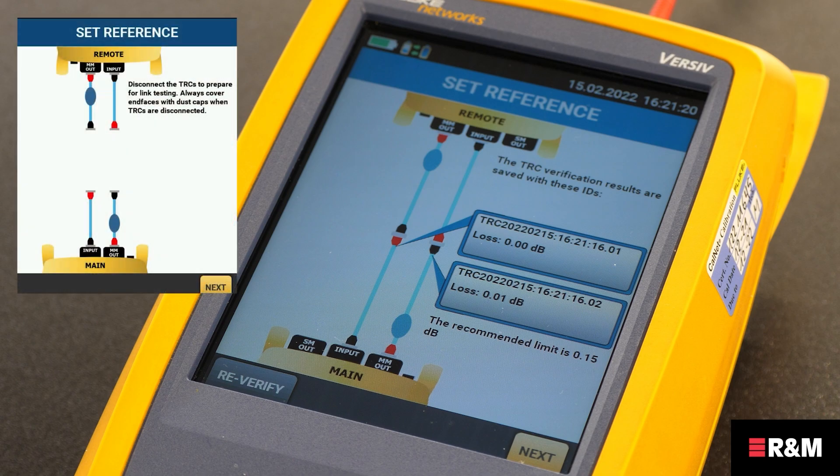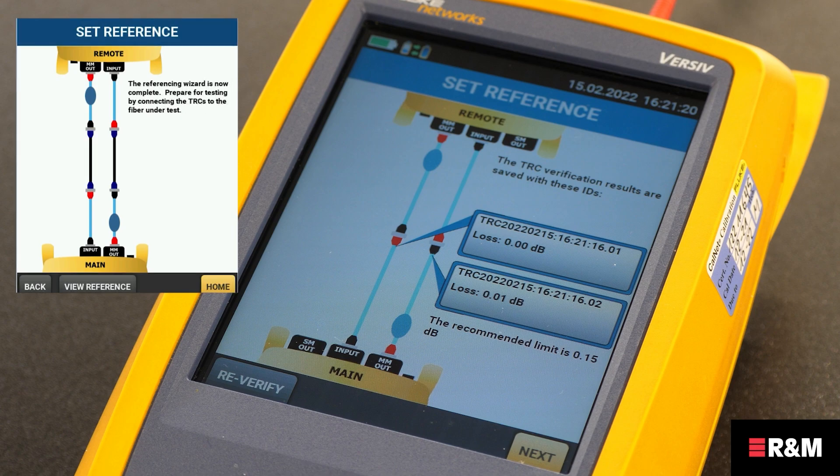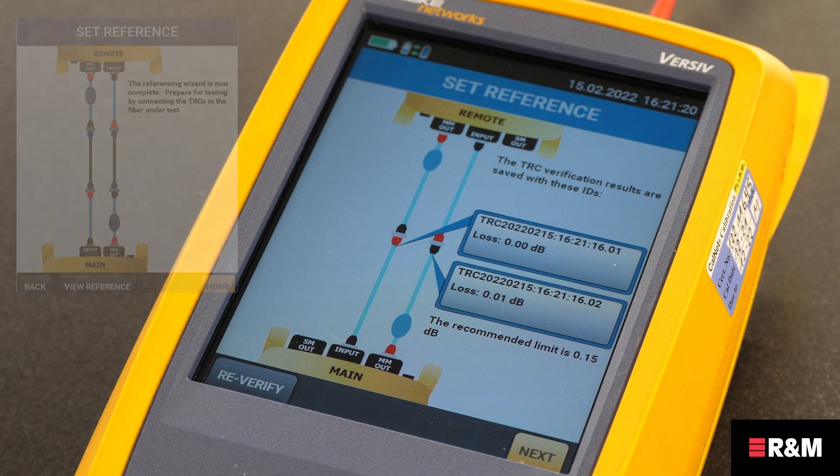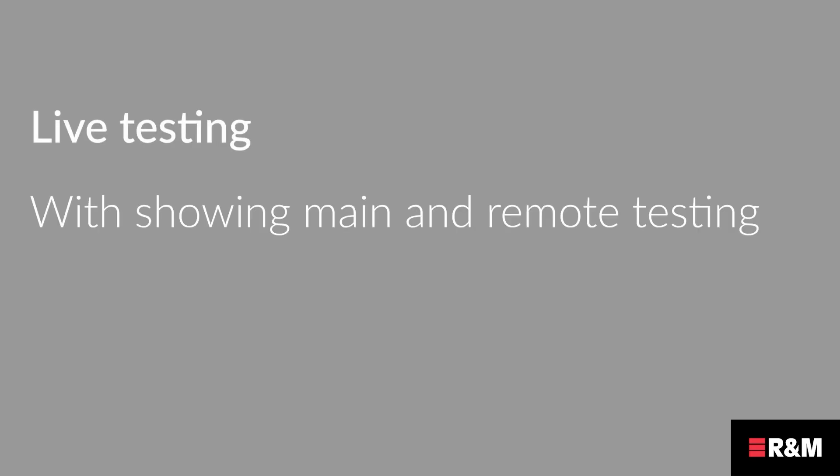On the set reference screen, when the set reference or TRC verification procedure is completed, tap next to see how to connect to the link under test. Finally, we come to the live testing of the installed link.